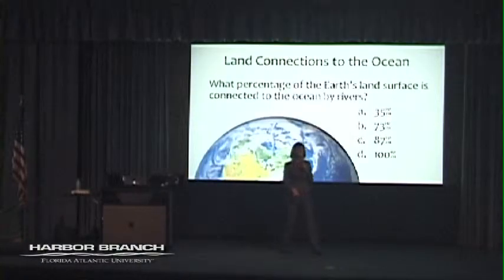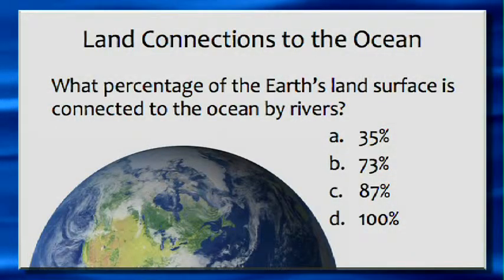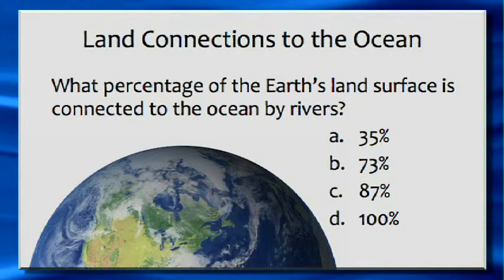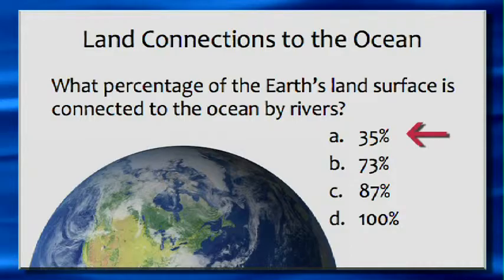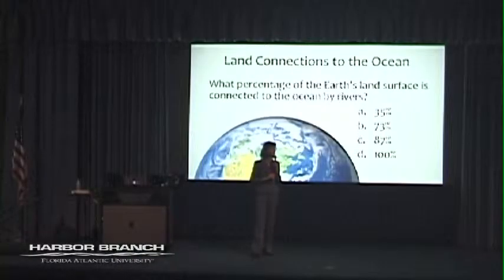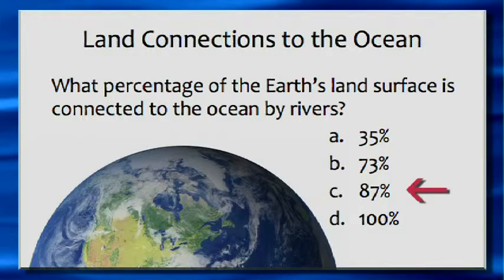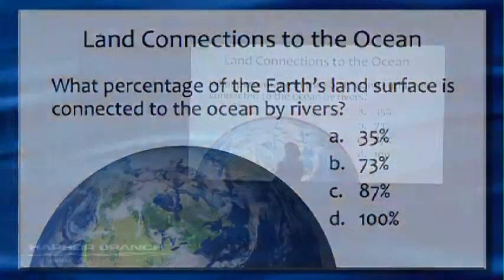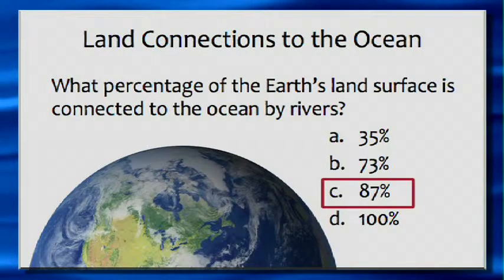Here's a pop quiz — no grades. Think about this: how much of the earth's land surface is connected to the ocean through the rivers? Who thinks it's about 35%? Who thinks it could be as much as 73%? Who thinks it's 87%? That's starting to get a majority. Who thinks it could be 100%? It's somewhere between 87% and 100%.